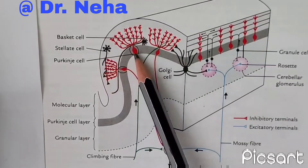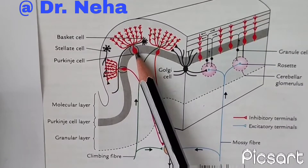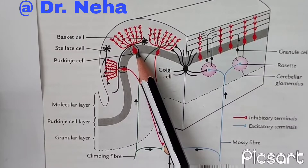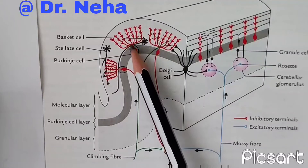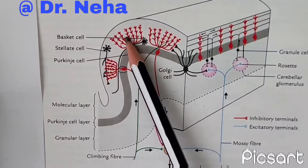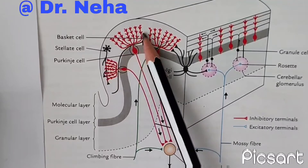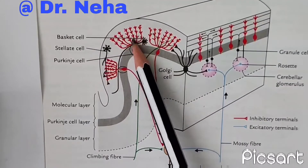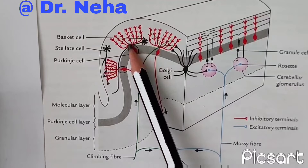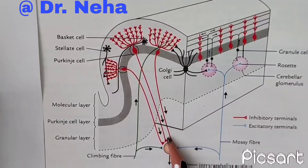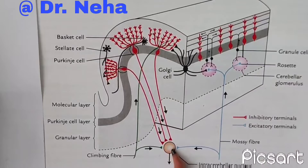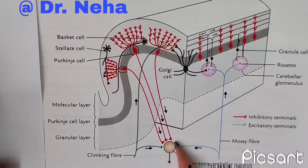Then we have the Purkinje cell layer. These are the Purkinje cells; it is the intermediate layer and consists of flask-shaped cells. The dendrites arise from the neck of the flask and pass upwards, dividing into many branches. The axons of the Purkinje cells go directly into the central core of the cerebellum and synapse with the intracerebellar nuclei.